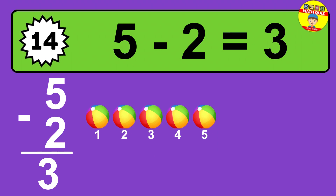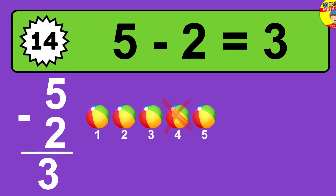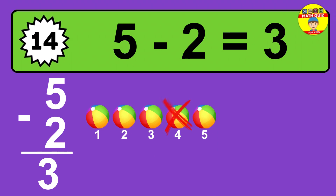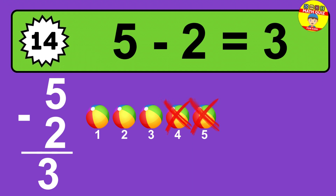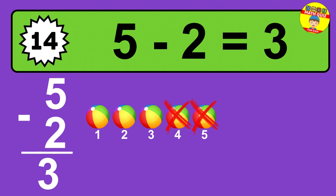Question fourteen: five minus two equals what? The answer is five minus two is three. Let's count it: one, two, three.